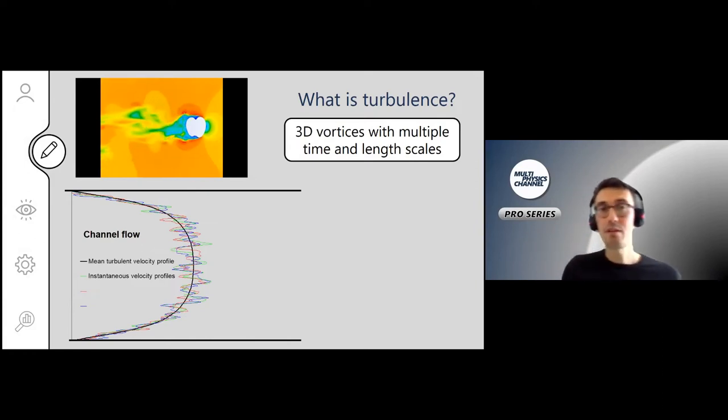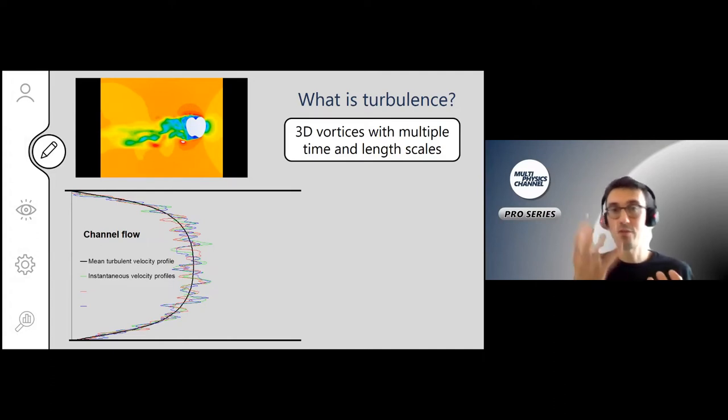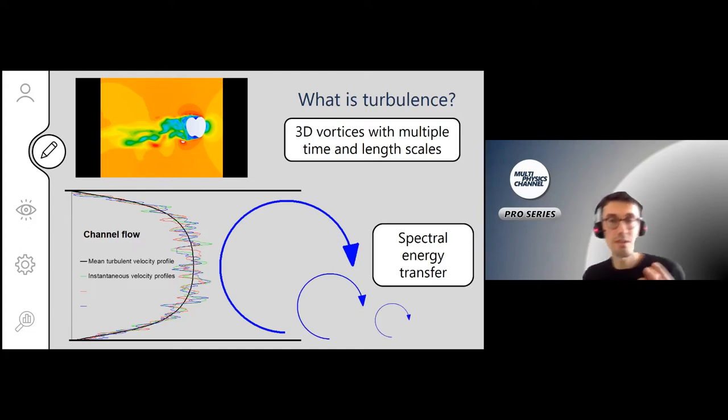If we go deeper into what turbulence is, it's actually a collection of 3D vortices with different time and length scales which move along and are created by the flow. For example, you see large vortices created around this apple fruit. If you measure this in channel flow, you see the average velocity profile, but at certain points in time you get instantaneous profiles that fluctuate around this average velocity. Large turbulent vortices are created and break down to smaller vortices, and in the end they dissipate into heat. You get a spectral energy transfer from the big vortices to the small ones.